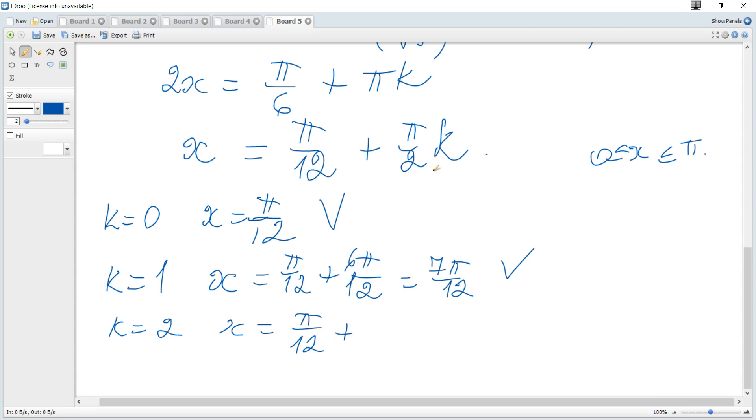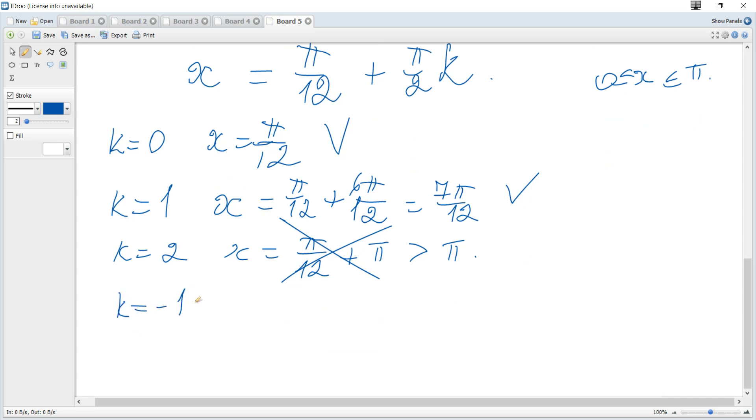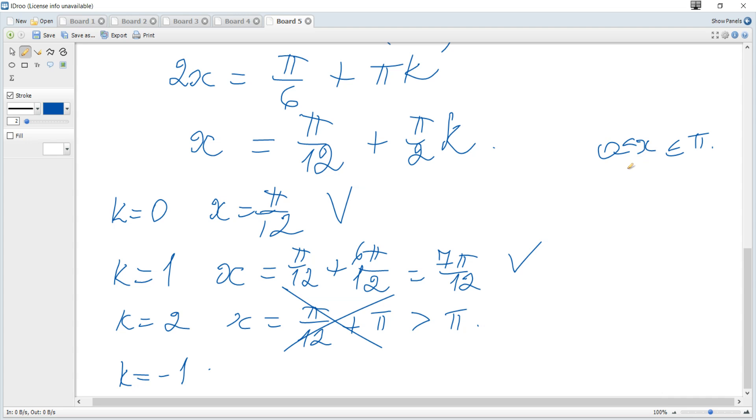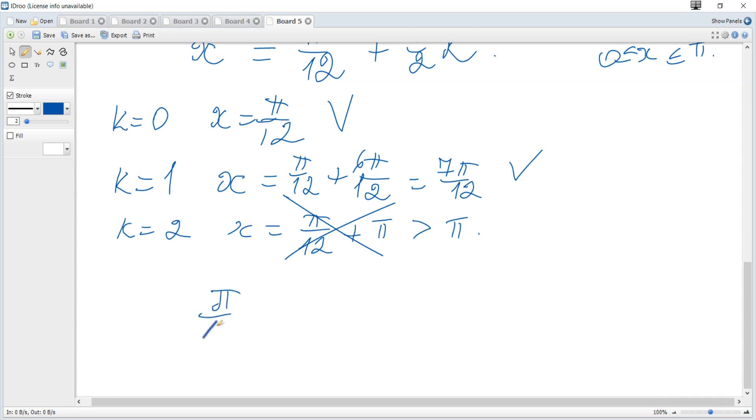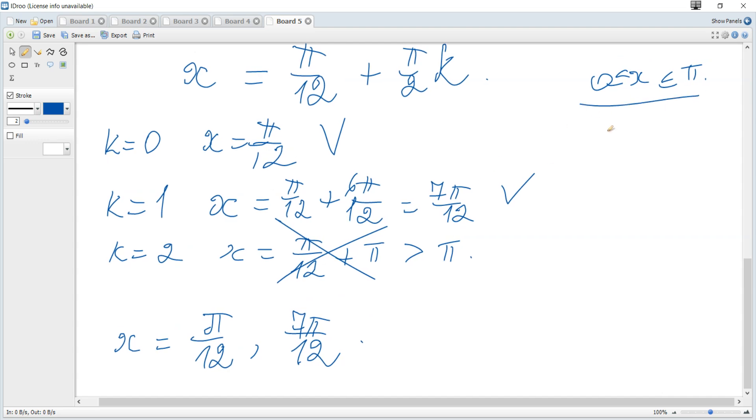When k = 2, x = π/12 + π, which is greater than π, so it's not a solution. For k ≥ 3, we get values greater than π, so no solutions. For k = -1 or negative values, we get x < 0, so no solutions. The answers are π/12 and 7π/12 from the given region, and that's all for this question.